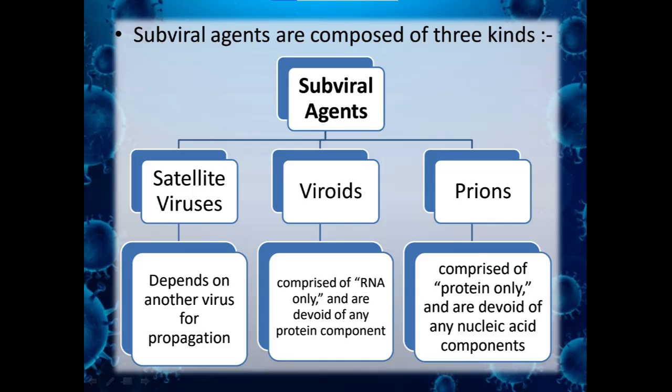Satellite viruses basically depend on another virus for propagation. Viroids are comprised of only RNA — they are devoid of any protein components. As we know, a virus is made up of a genetic material, either DNA or RNA, along with a protein capsid. But viroids are only composed of RNA, whereas prions are comprised of proteins only and are devoid of any nucleic acid components.